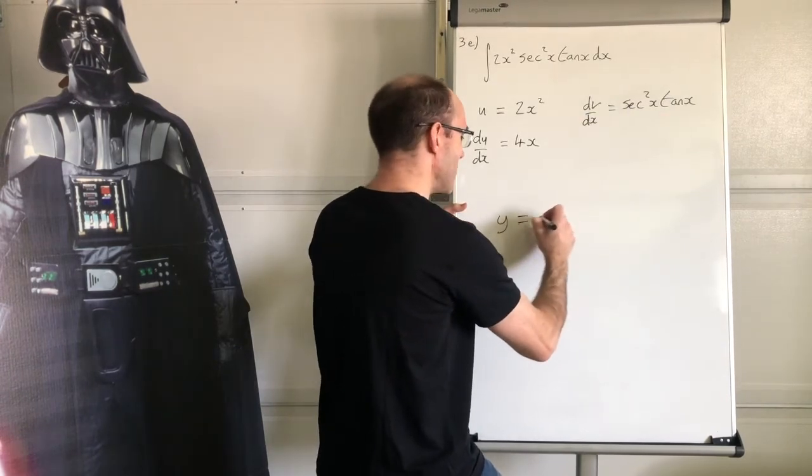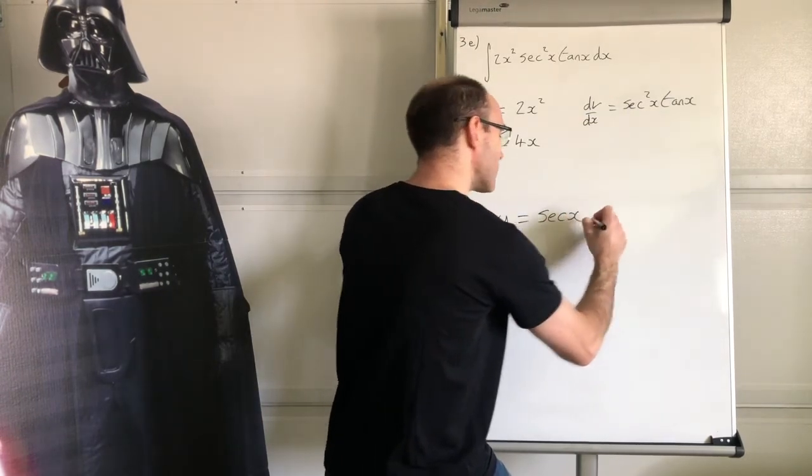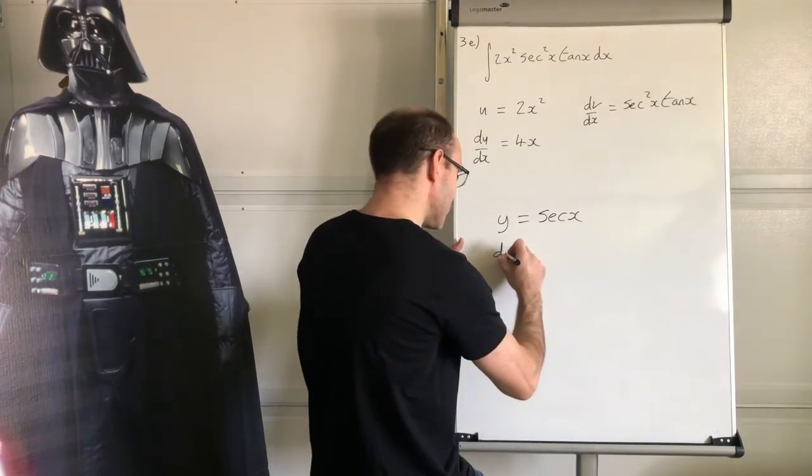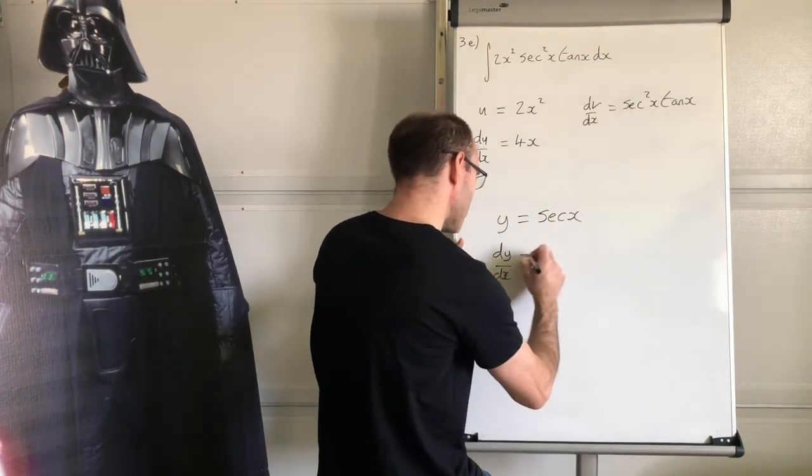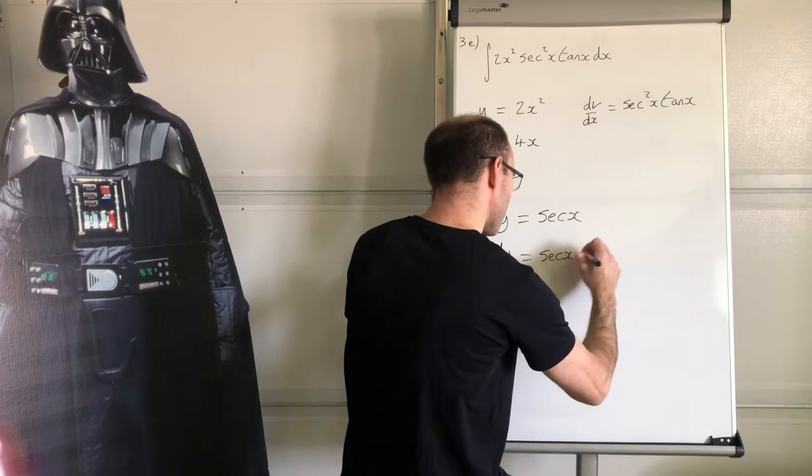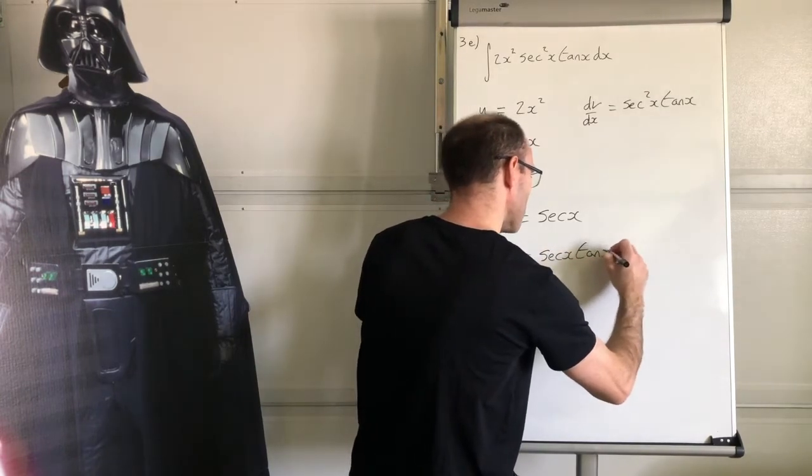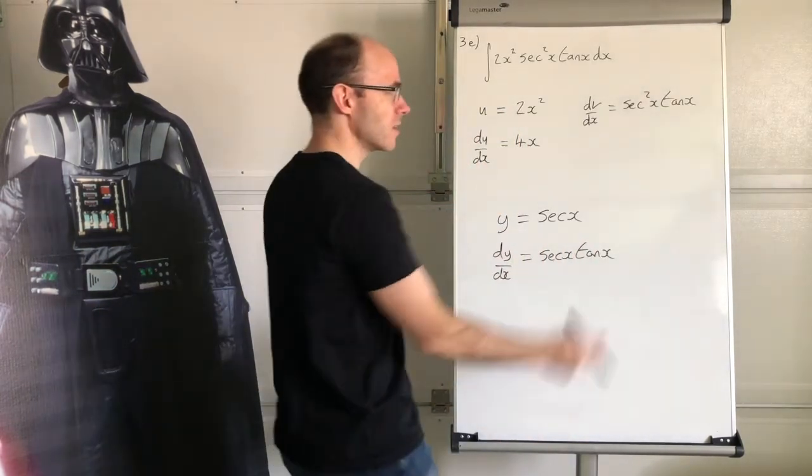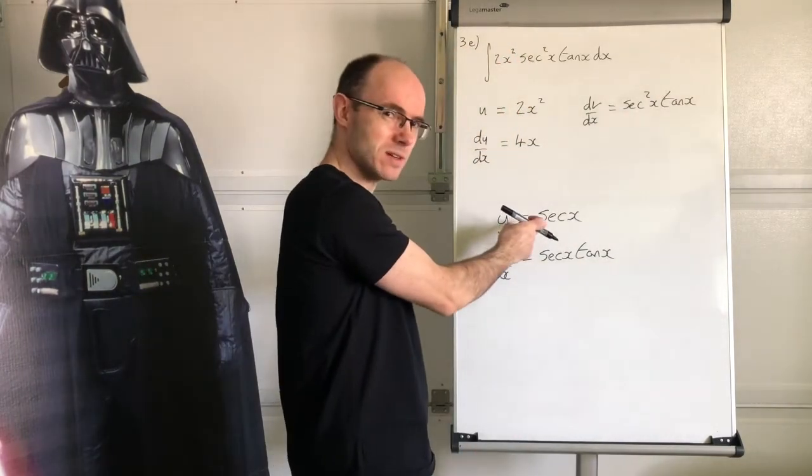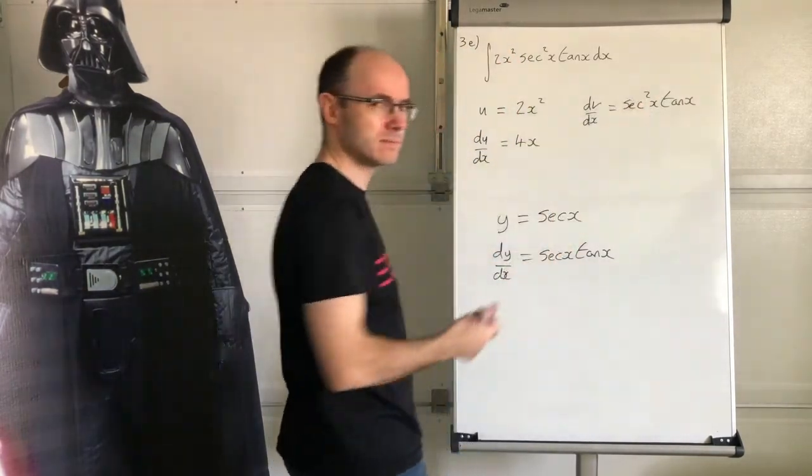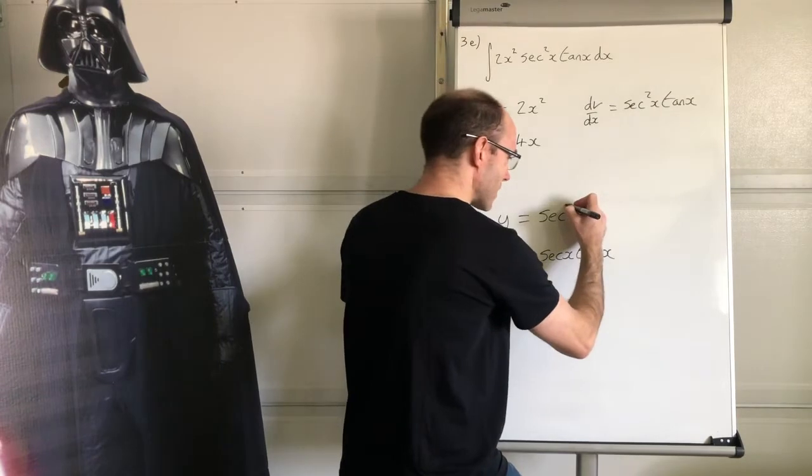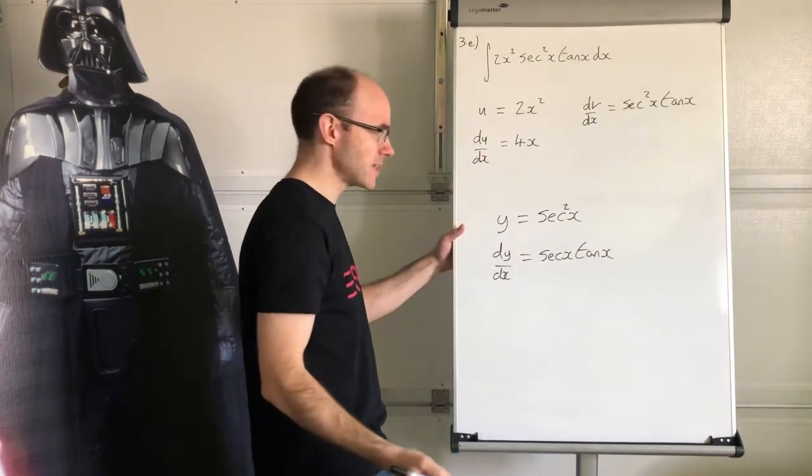Maybe you remember this, that when you differentiate sec x, you get sec x tan x, right. And that's one of the derivative results you need to know. You've almost got it, haven't you? So you see how to change this to get something like that. Let's just change that to sec squared x, shall we, and see what happens.